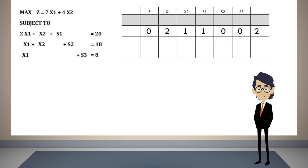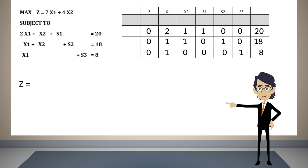Now we will place the values of the variables in the rows that correspond to the second and third constraints. Observe that the values found on the right-hand side of the equalities appear in the last column of the table. To write the objective function following the same pattern, we must rewrite it in the following form. Now we are ready to place the equation in the table.